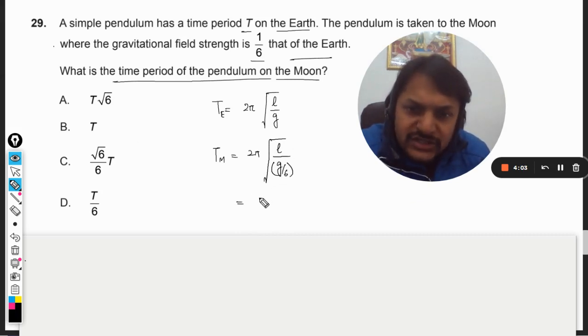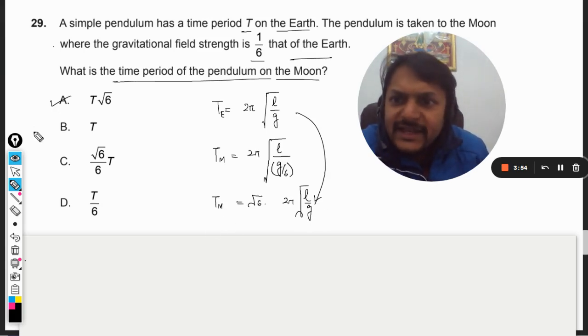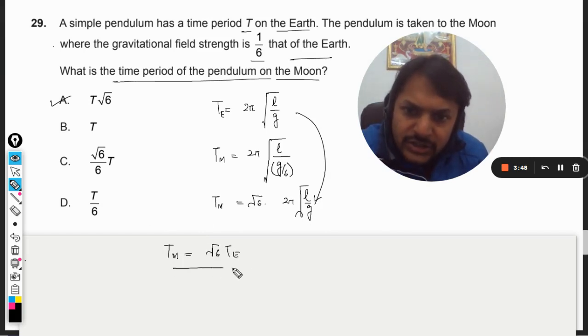So you can just replace everything like this. T will be replaced here. So you can always say that A will be the answer. The time period on the Moon will be root 6 times the time period on Earth.